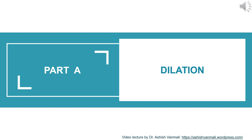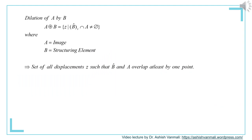Let's go for the first part, that is dilation. The dilation of image A by structuring element B is given by a set of all Z such that B-cap Z intersection with A is not a null set. Practically speaking, it is the set of all displacement Z such that B-cap and A overlap at least by one point. Here B-cap is the reflected version of structuring element B.